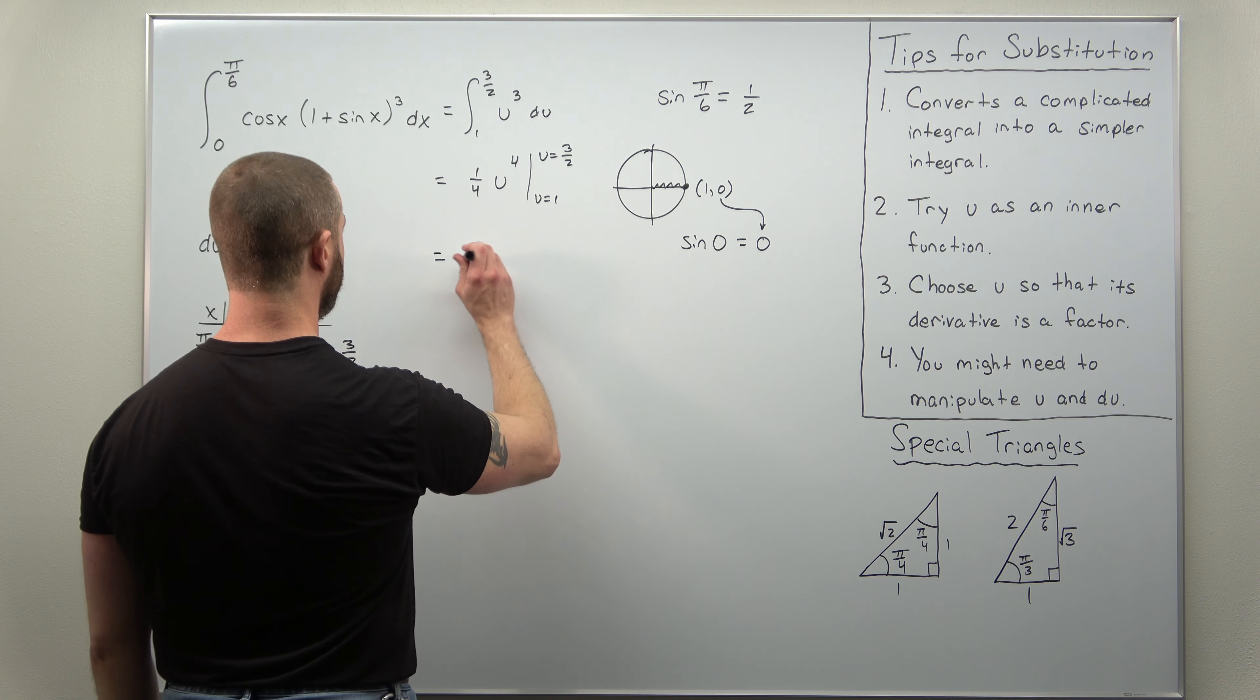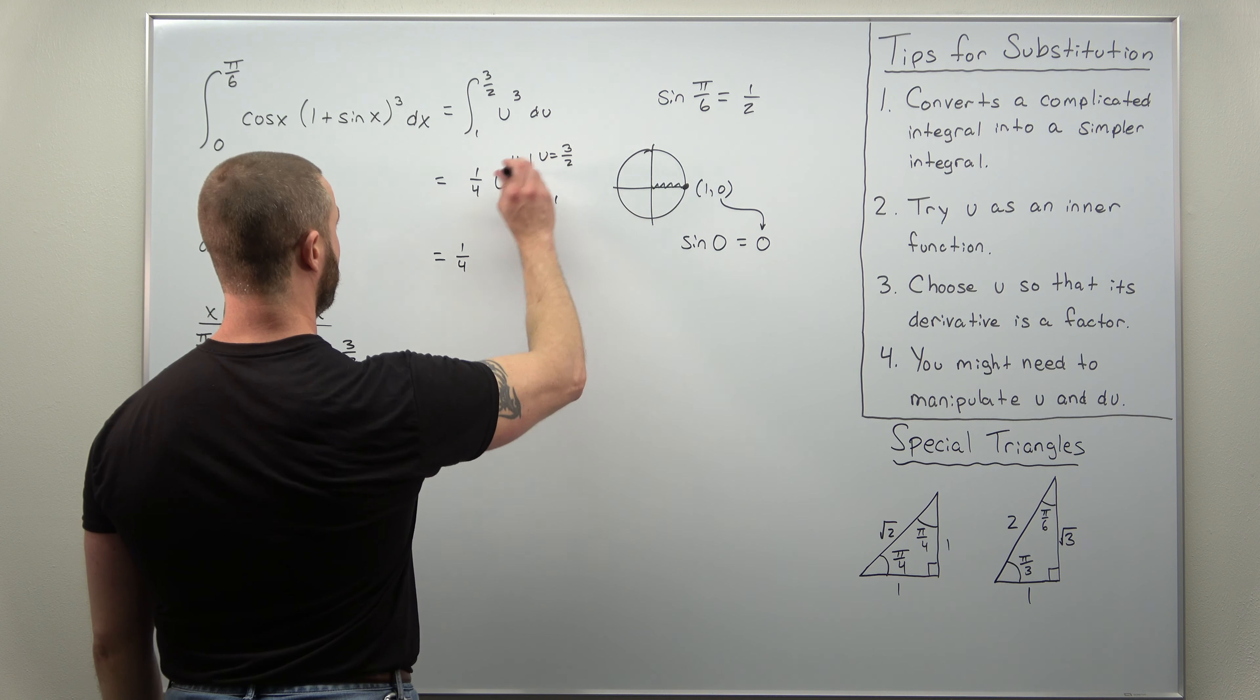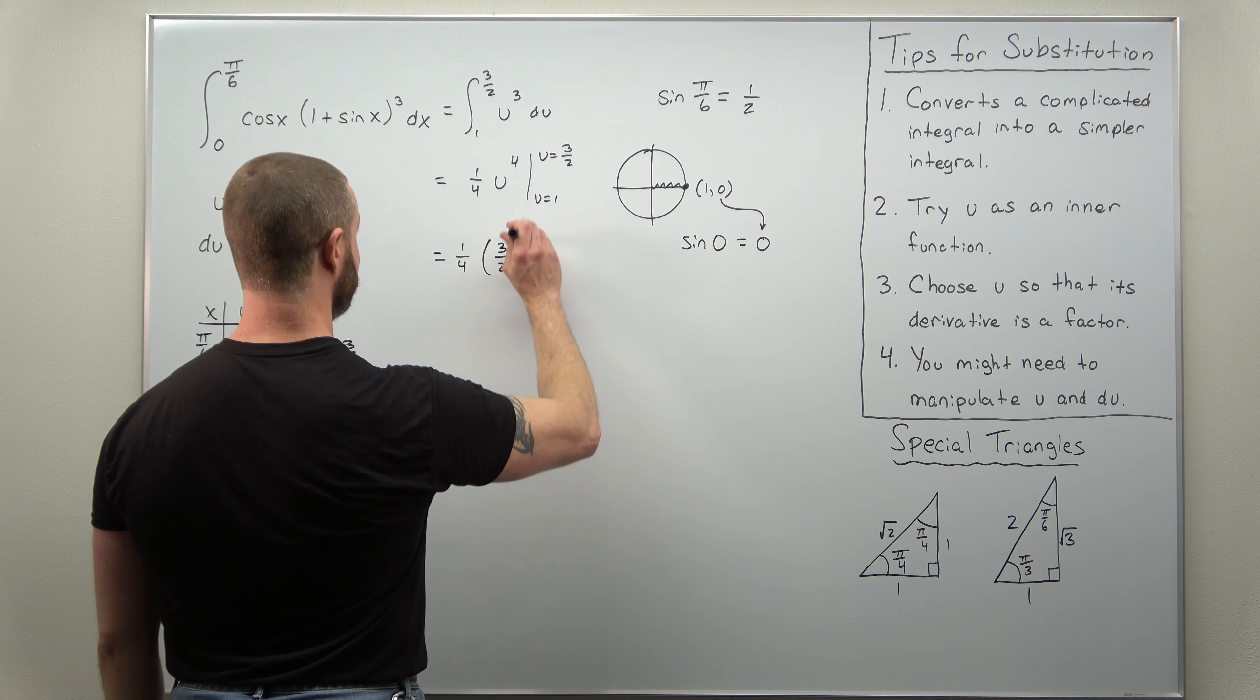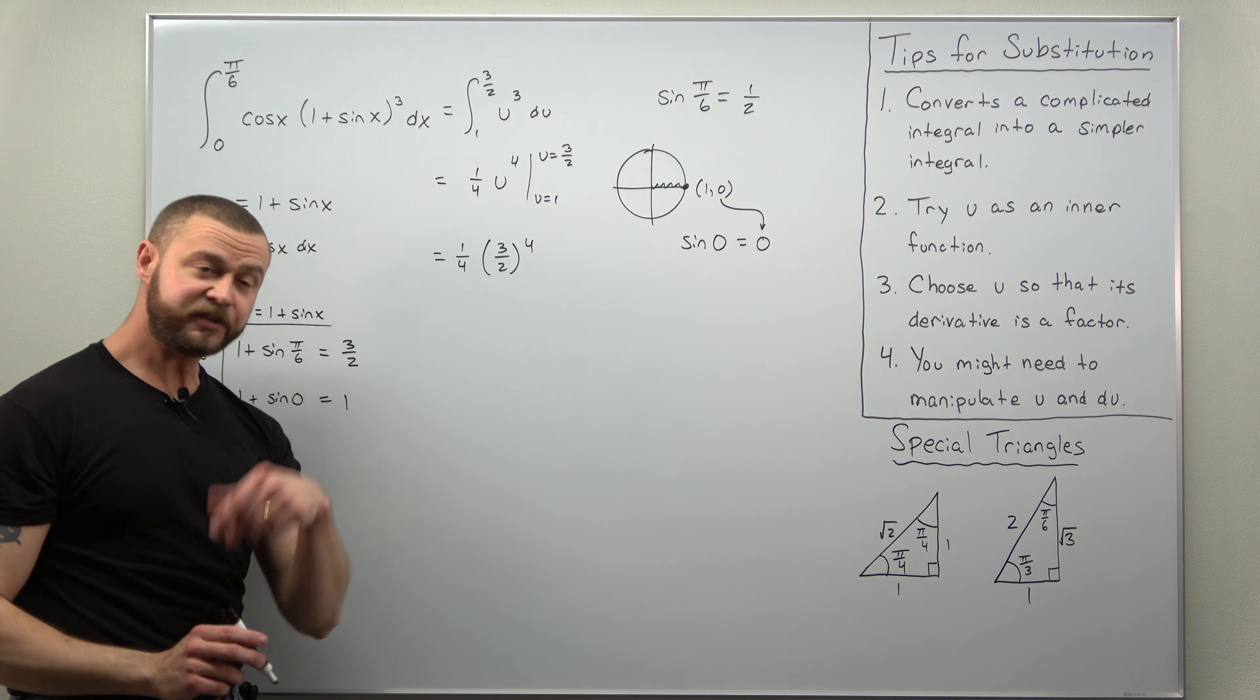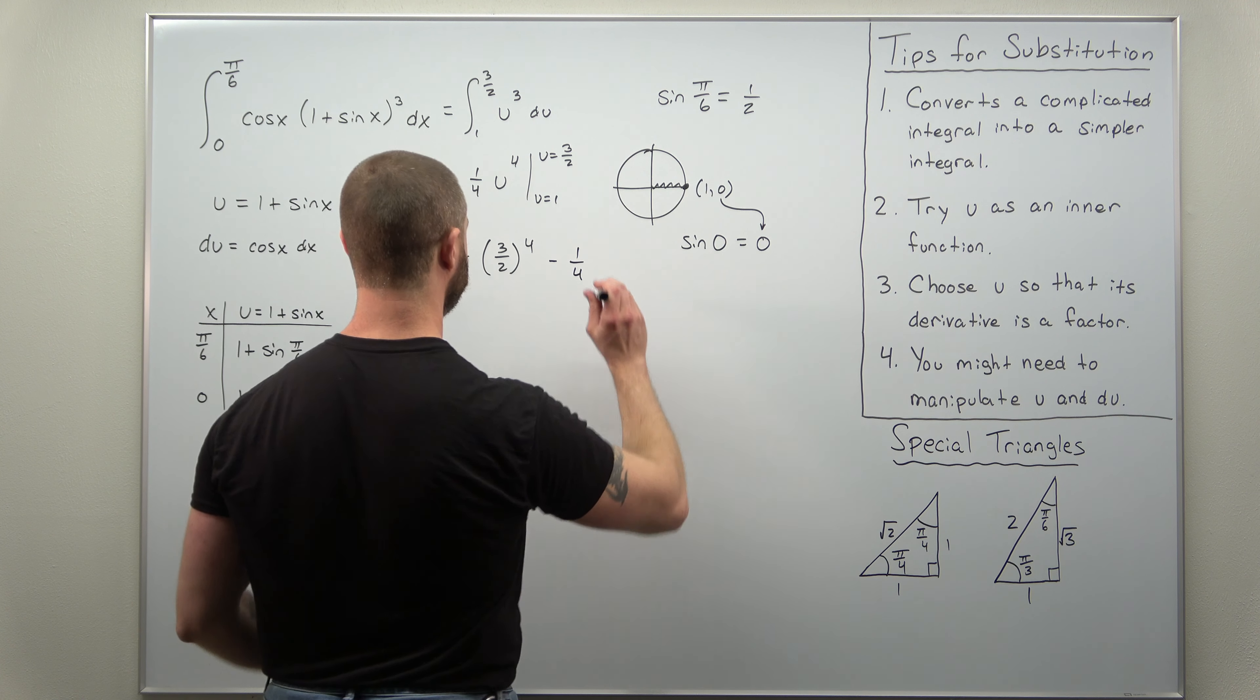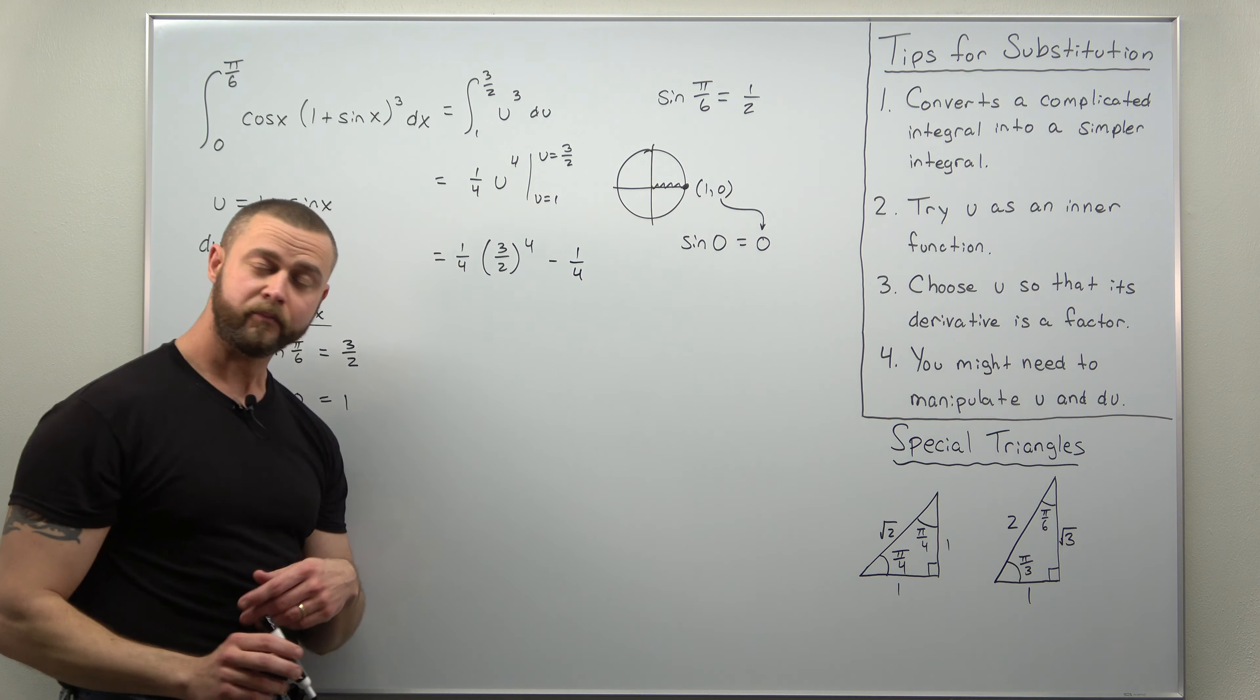So we should get one fourth - we're going to be plugging in u as three halves, so we get three halves to the fourth power. And when you plug in one, one to the fourth power is just one, so we have when you plug in u as one just minus one fourth. If you want, you can factor one fourth out from this.